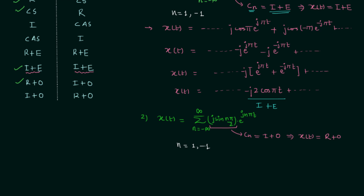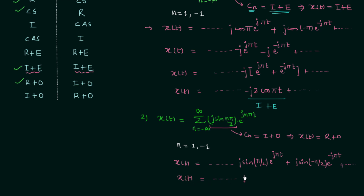Let's prove it quickly. Again I will consider n equal to 1 and n equal to minus 1. Putting n equal to 1, we have j·sin(π/2)·e^(jπt), and putting n equal to minus 1, we have j·sin(−π/2)·e^(−jπt). Since sin(π/2) equals 1 and sin(−π/2) equals minus 1, we can write xt equal to j·e^(jπt) − j·e^(−jπt).